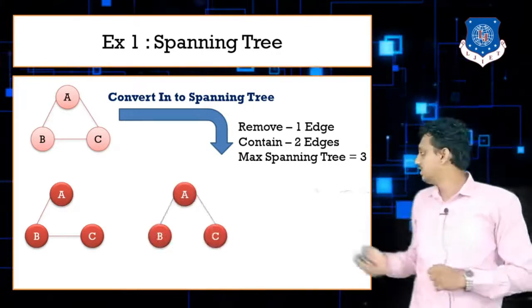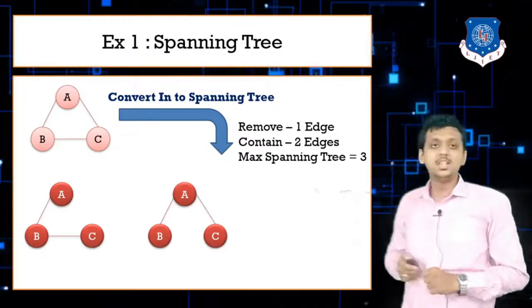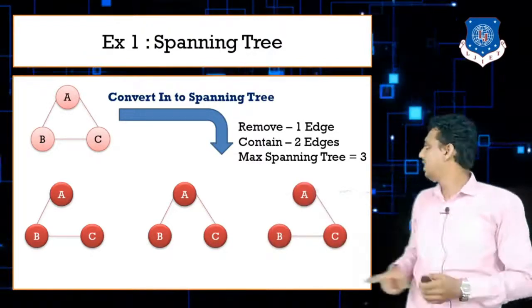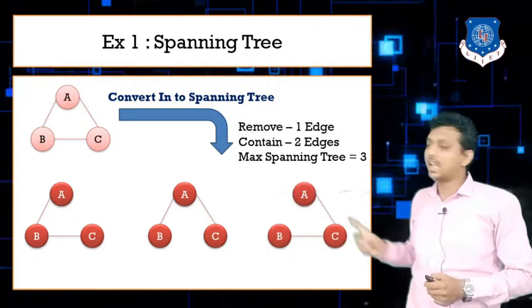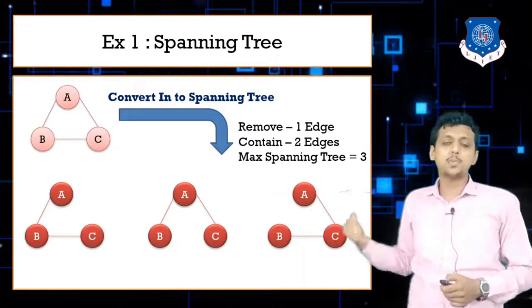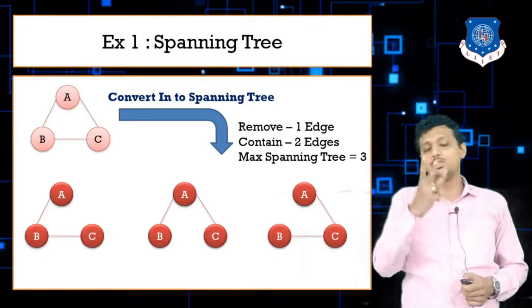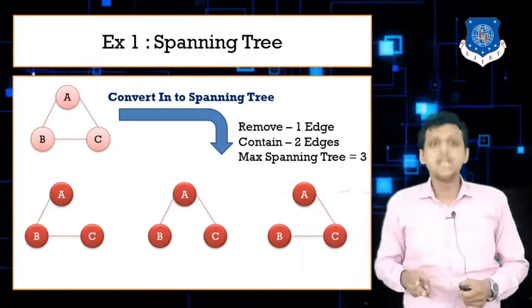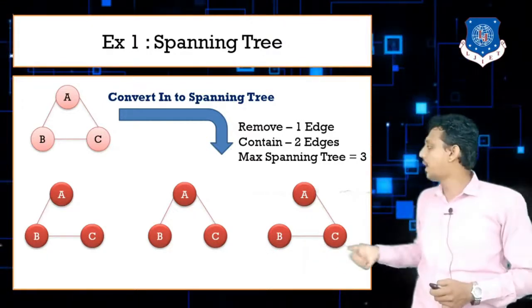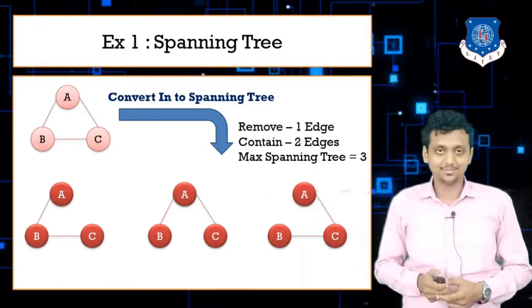We can also make spanning trees by removing other edges. In the second version I removed edge BC, and in the third version I removed edge AB. So these are 3 different spanning trees. Since we have 3 vertices, the maximum number of spanning trees is 3 raised to 3 minus 2, which equals 3 raised to 1, meaning only 3 spanning trees. Here are all 3 spanning trees made from graph A, B, and C.